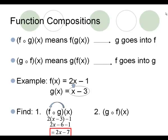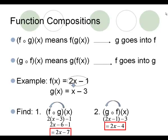On number 2, we are taking Frank's equation and putting him into George's equation. I replace Frank into George: 2x minus 1 goes in as x and then I have minus 3 after that. When I combine my minus 1 and minus 3, I get 2x minus 4 for a final answer.